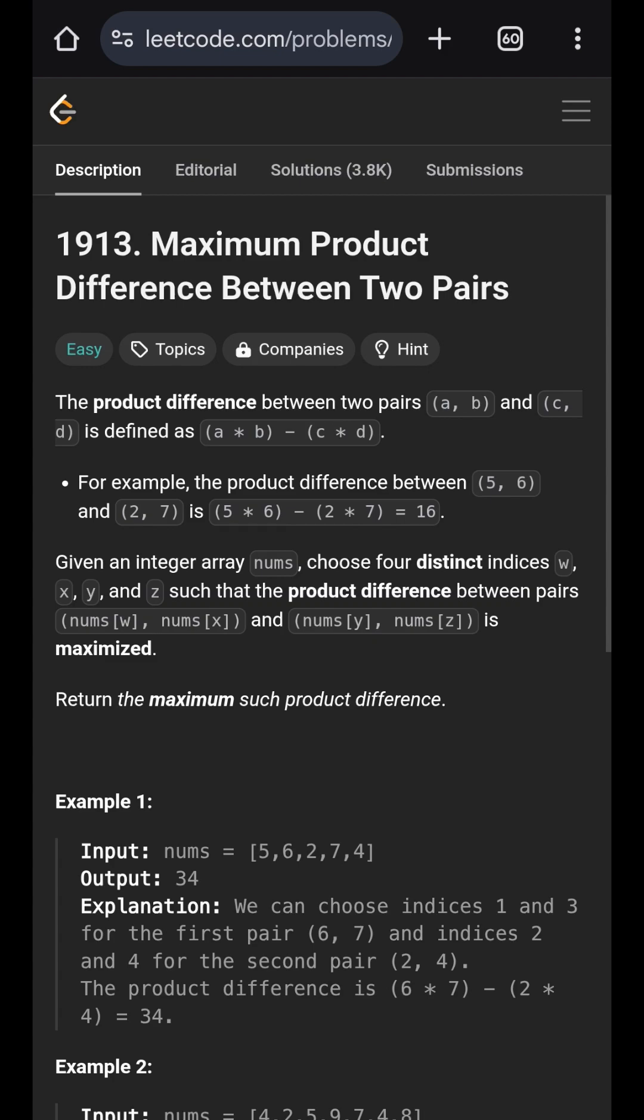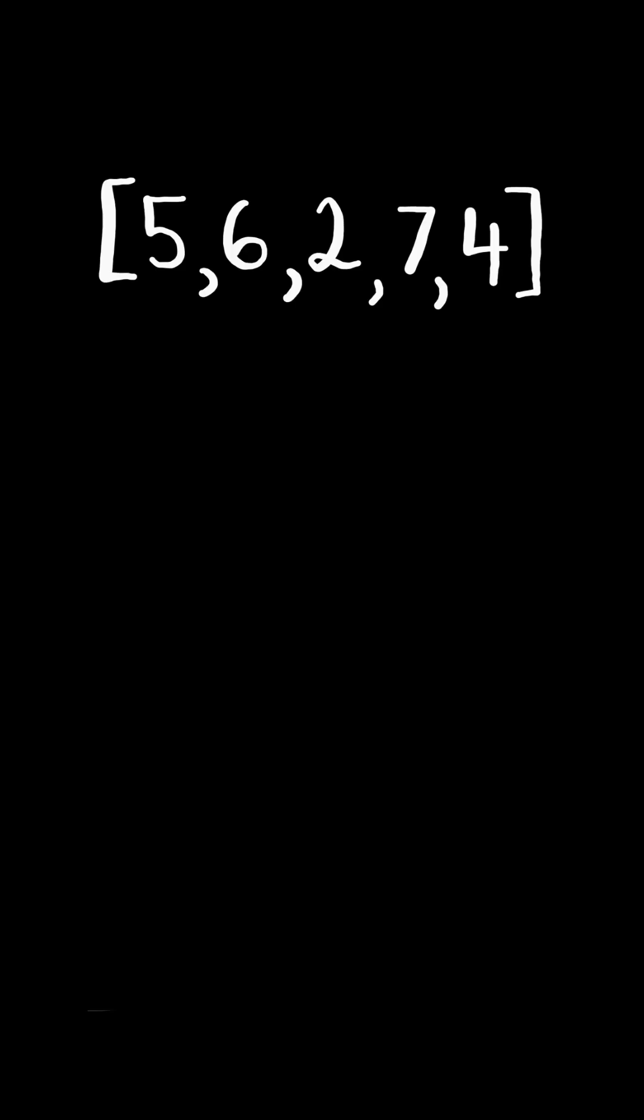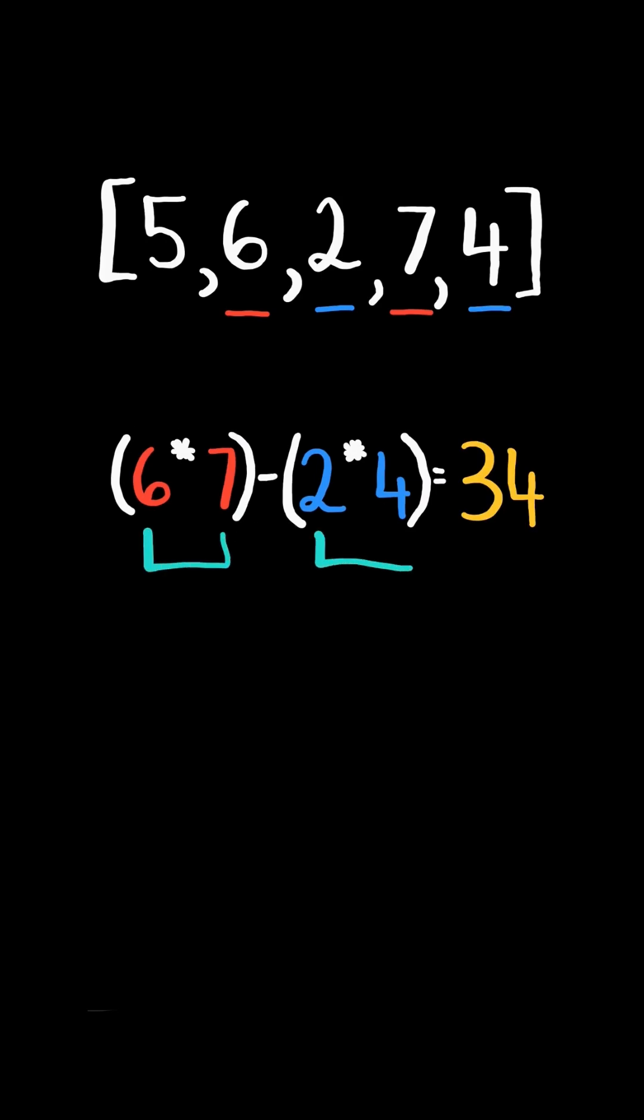Maximum product difference between two pairs. Given a list of numbers, choose four distinct indices and pair the numbers up. Multiply them together and calculate the product difference. Choose four numbers such that the product difference is maximized.